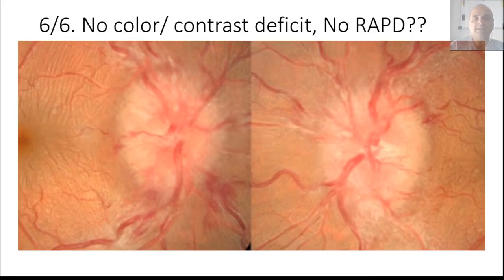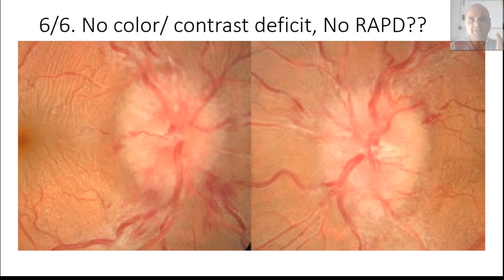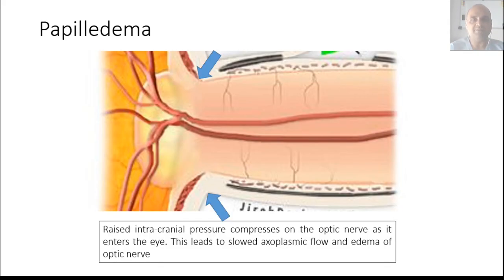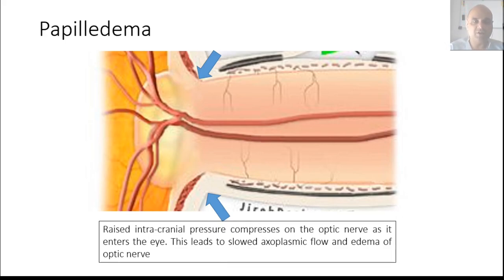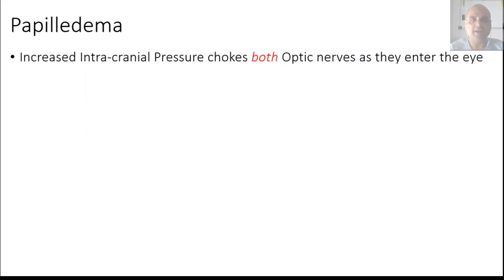Finally, papilledema. Looking at these two pictures from the same patient — right and left optic disc — the patient has 6/6 vision, no color or contrast deficit, and no RAPD. The margins are indistinct and the cup is not visible, but the discs have more of an edematous rather than inflammatory appearance. Papilledema is raised intracranial pressure which compresses or chokes the flow of axoplasm within the optic disc. Initially, it only slows axoplasmic flow, so there is no loss of vision or color/contrast in the acute stages. Raised intracranial pressure can be due to tumors, meningitis, or any other cause.